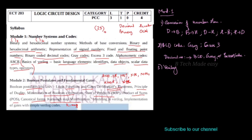Module 2 also covers Modeling in Verilog and Implementation of Gates with symbols in Verilog. This is basic hardware simulation using Verilog. We implement Logic Circuit Designs and minimization of Boolean expressions in Verilog.